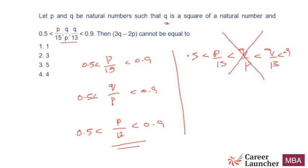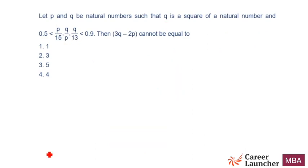Now let's look at solving the question, and here I will again be using the choices. It says Q is a square of a natural number. Let me write it down: P/15, Q upon P, and P/13. Each of these has to be less than 0.9 and greater than 0.5.